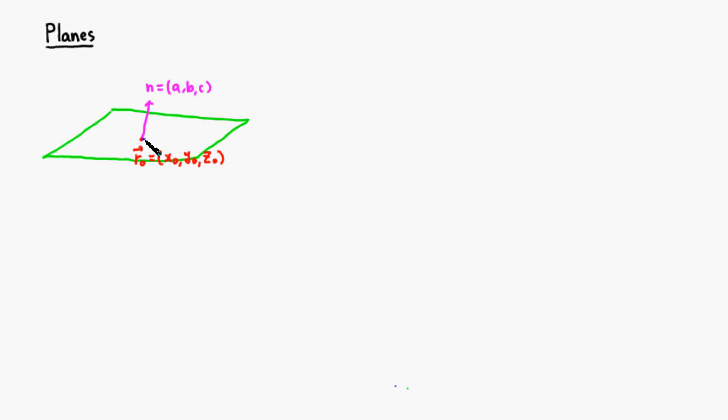So let's say if you take any point, I'm gonna take a random point r on the plane. I'm gonna give it general coordinates x, y, z. Then the vector from r0 to r, maybe